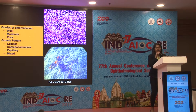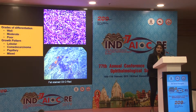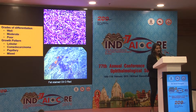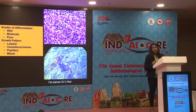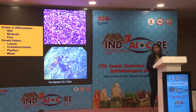Looking at it histopathologically, the classification includes well-differentiated, moderate, and poorly differentiated. Depending upon the growth pattern, it can be lobular, comedocarcinoma, papillary, or mixed characteristics. The characteristic fat stain — oil red O — can help you differentiate sebaceous gland carcinoma.